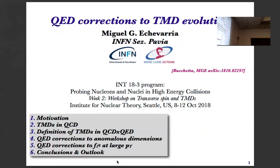So this is the outline of the talk. I will motivate a bit why we care about these QED corrections. We'll review briefly TMDs in QCD. This already appeared in other talks, but I will remind you again the main formulas. Then I will also define the TMDs in QCD cross QED, an extended theory. From that, I will be able to calculate the QED corrections to the anomalous dimension of the TMDs and the D term. And then I will show you the QED corrections to the Wilson coefficient of the unpolarized TMD-PDF.